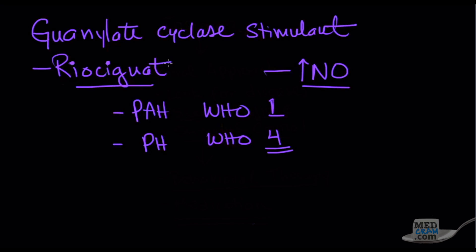You could use bosentan added to either epoprostenol or treprostinil. Or you could do treprostinil added to either bosentan or sildenafil. So there are different ways of doing this. And this is very similar to how we increase blood pressure medication for systemic hypertension. We can also do this for pulmonary hypertension.